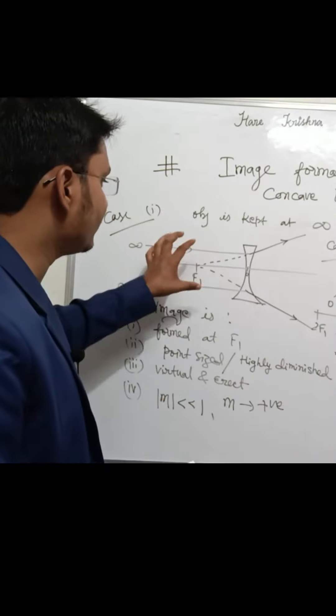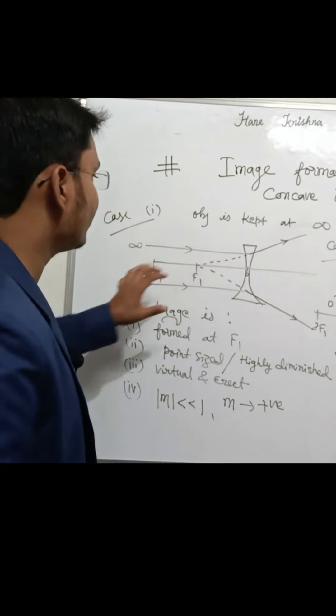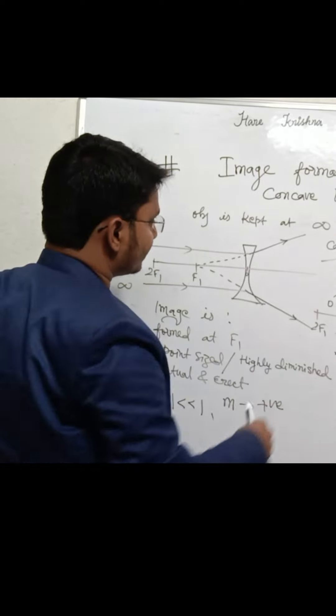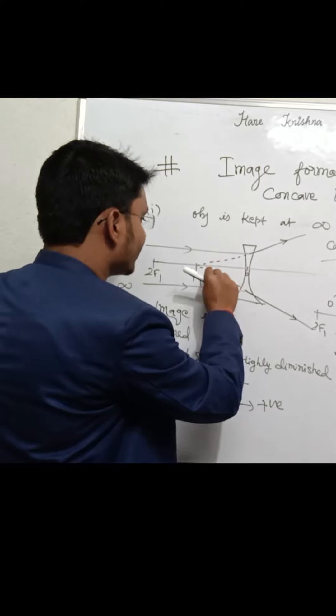When the object is at infinity, parallel rays pass through the concave lens. The concave lens will diverge these rays. The diverging rays, when produced in the backward direction, appear to meet where the image forms.